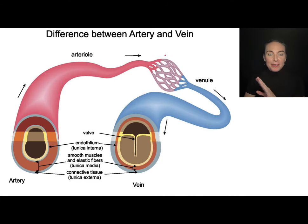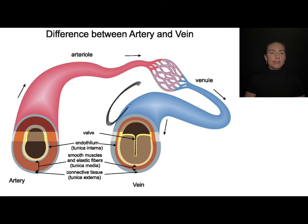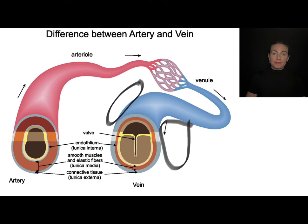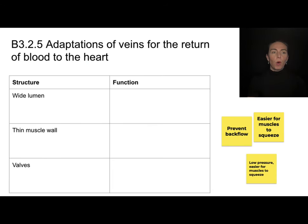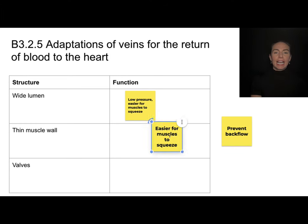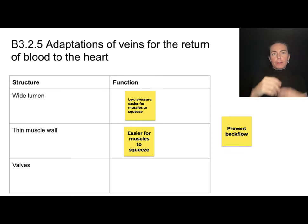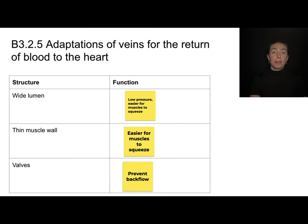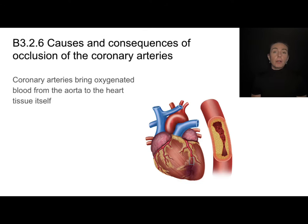Here's a better view of the valves. As skeletal muscle squeezes on either side of the vein, it forces blood back toward the heart. When the muscles relax, blood wants to go backwards, but the valves close to prevent backflow. The key features of veins: a wide lumen makes it easier for muscles to squeeze them and keeps blood at lower pressure than in arteries; the thin muscular wall offers little resistance to squeezing; and the valves prevent backflow of blood.